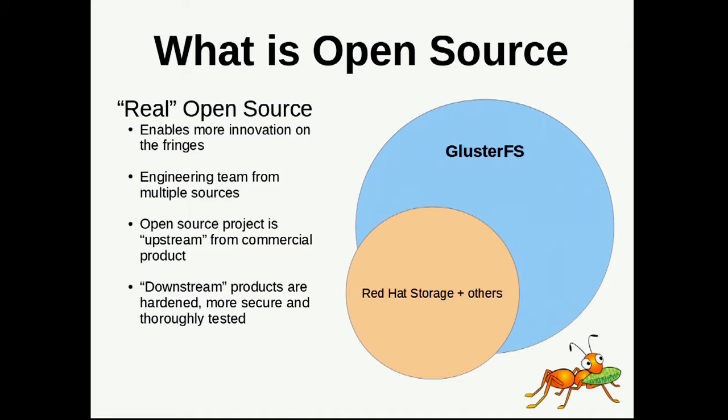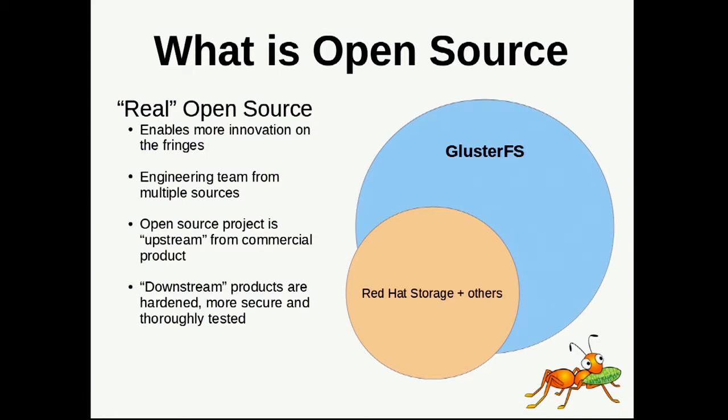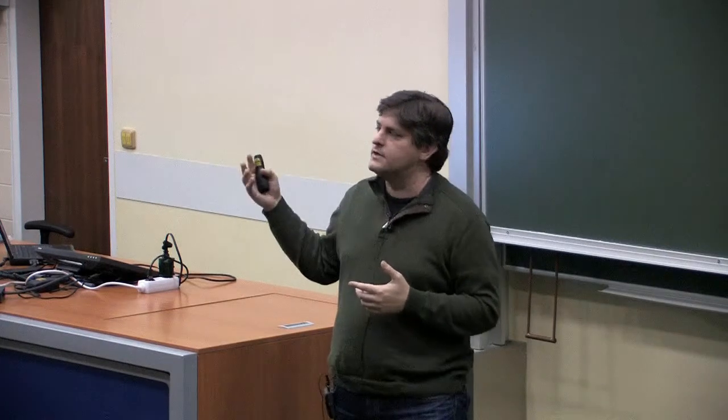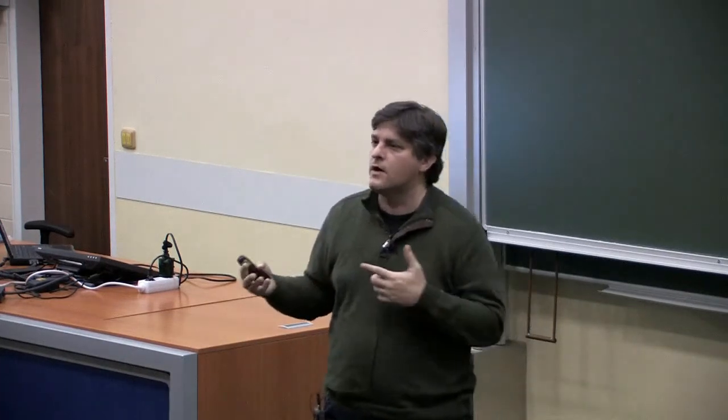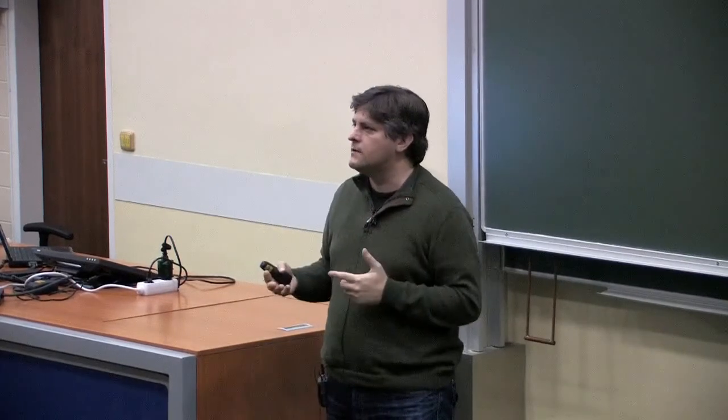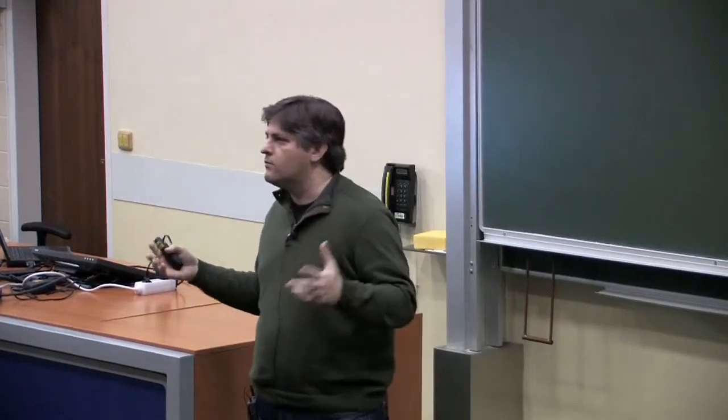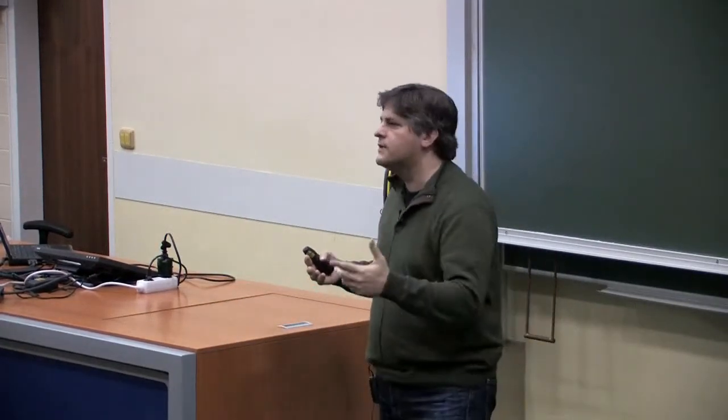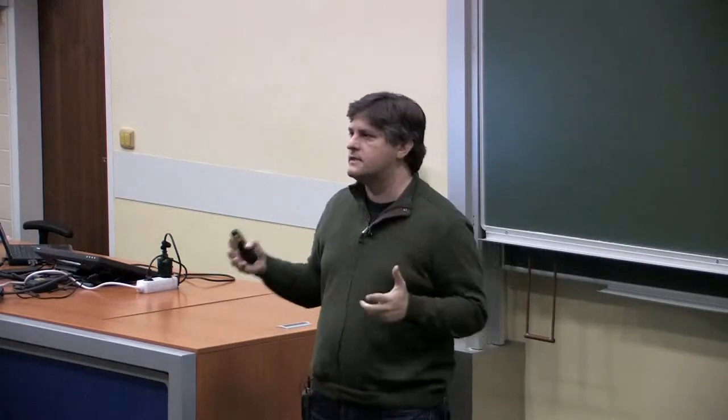What is open source? We're talking about the land where you can basically try anything. The open source model that we've adopted in the Gloucester community is that in the open source piece, anything goes. It's the place where innovation happens. It's a place where people have the freedom to fail and where we can learn from that failure. And then by learning from that failure, we can have a downstream product that works better.